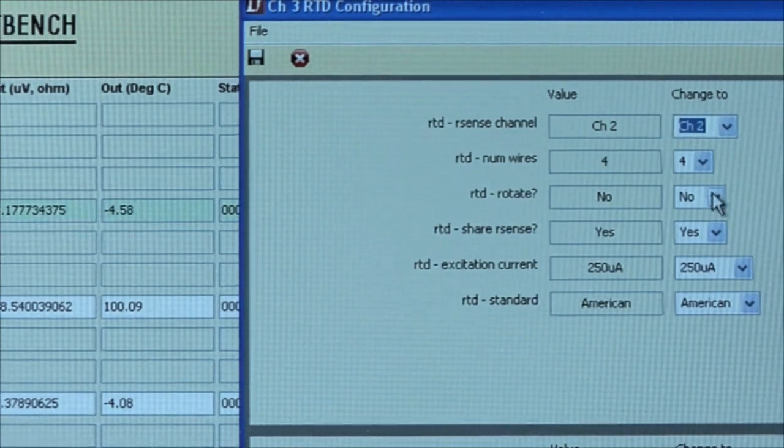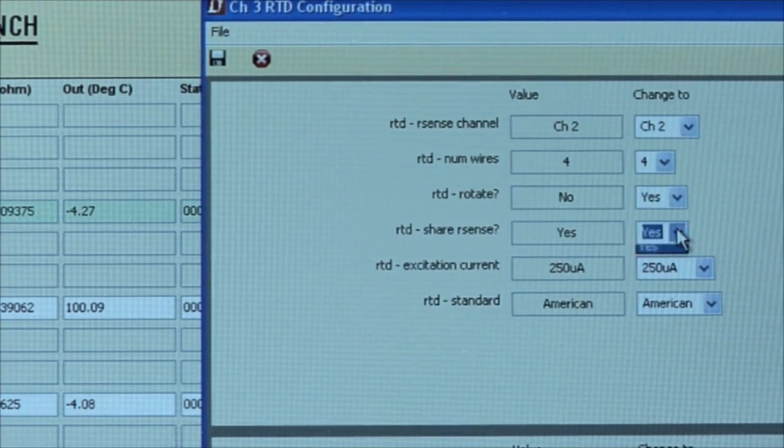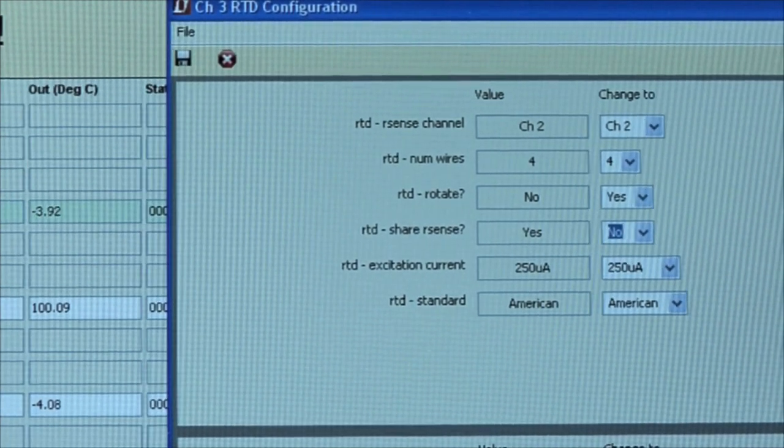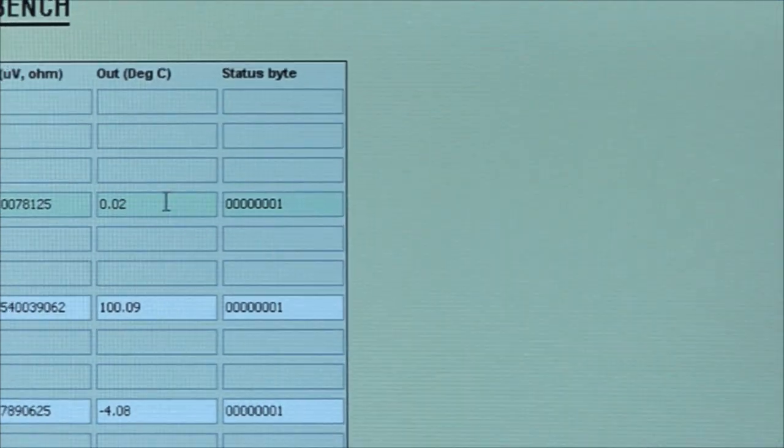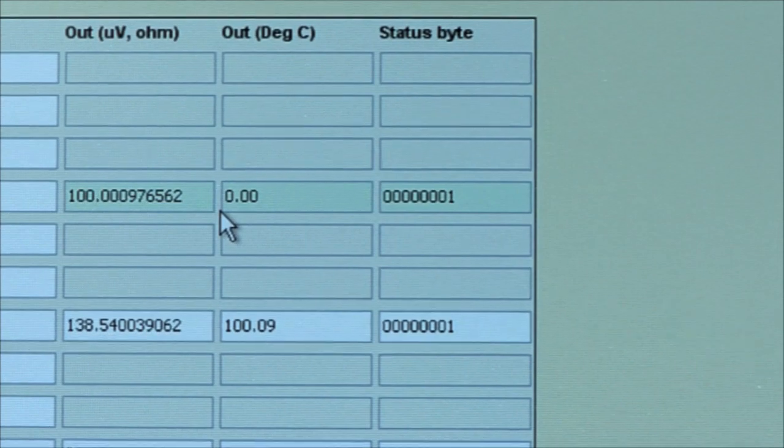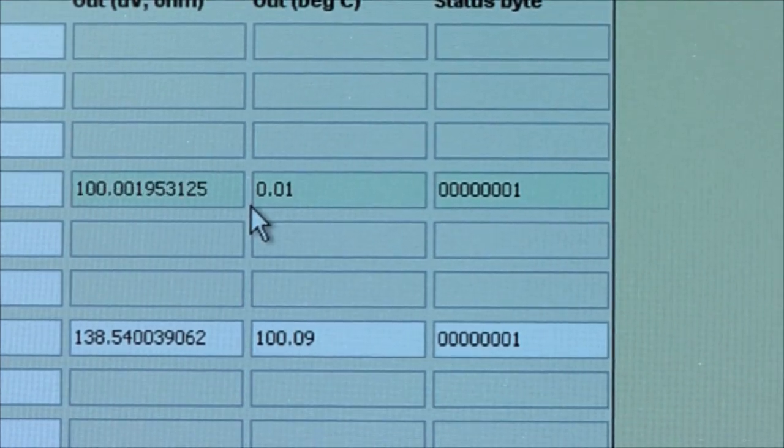In order to cancel these effects, the LTC2983 can perform automatic current excitation rotation. When the rotation is turned on, parasitic thermocouple errors are continuously removed from the result.